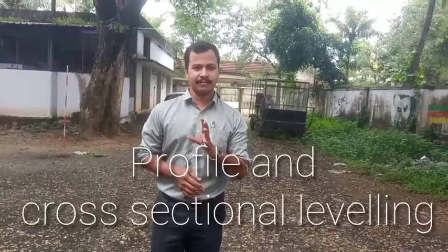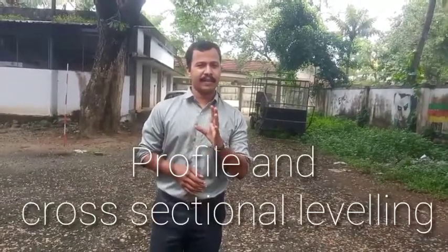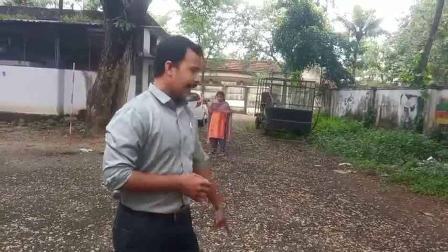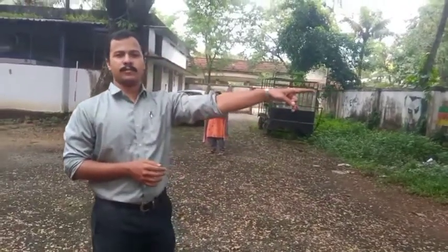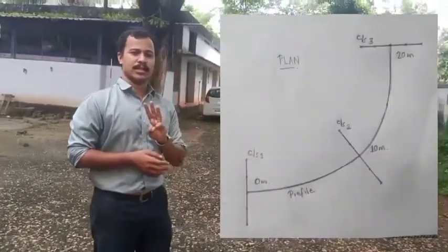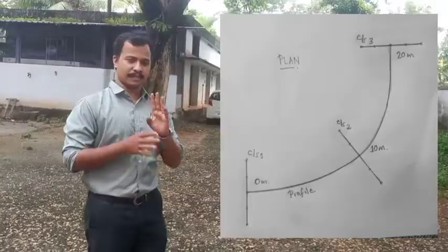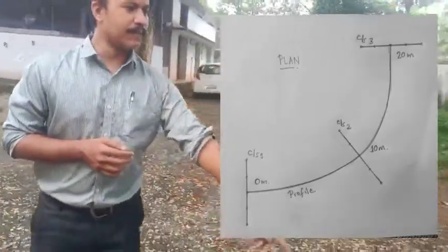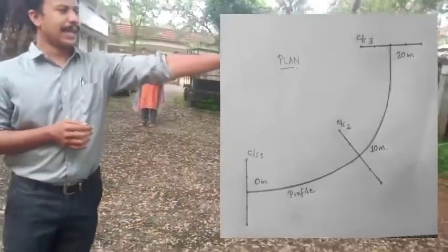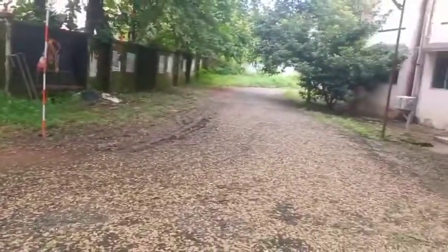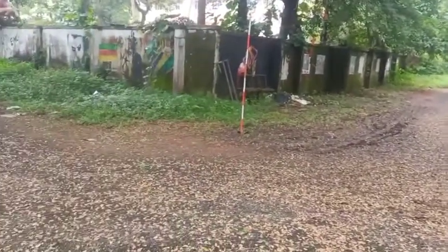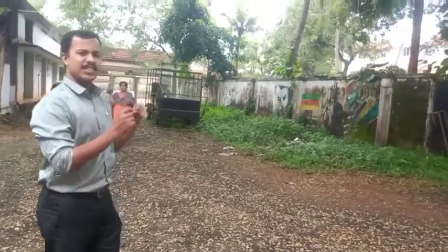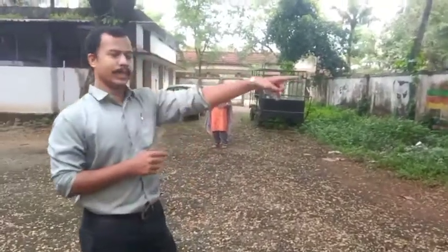We are doing profile leveling. In profile leveling, we will be taking a line of a road and we will be taking three cross sections. Here, this is the starting section of the road and it will reach that point. 20 meters away there will be station B, and we will be laying a chain from A to B.